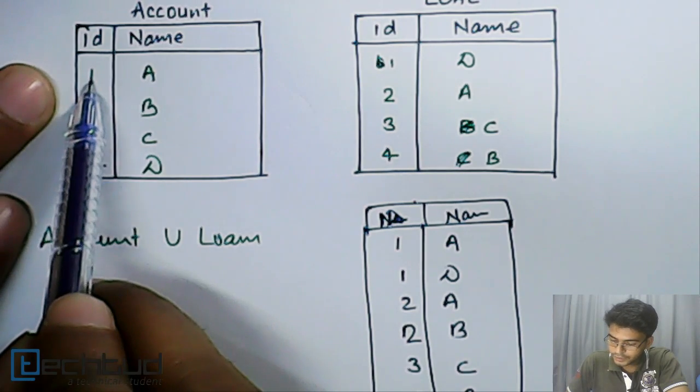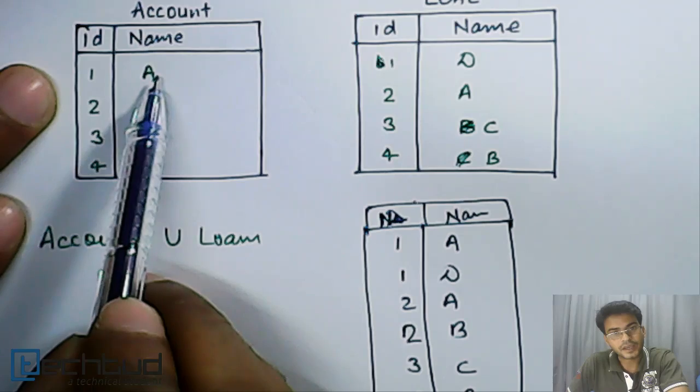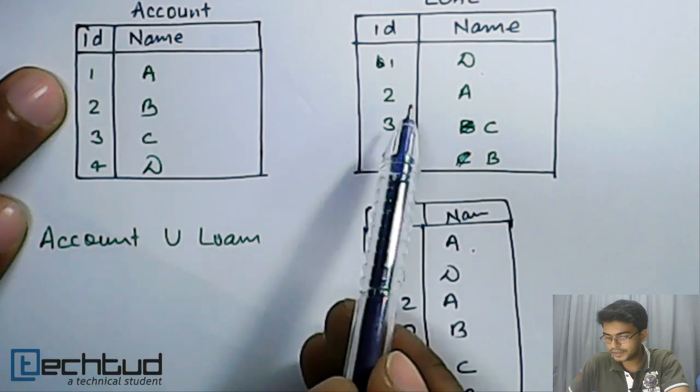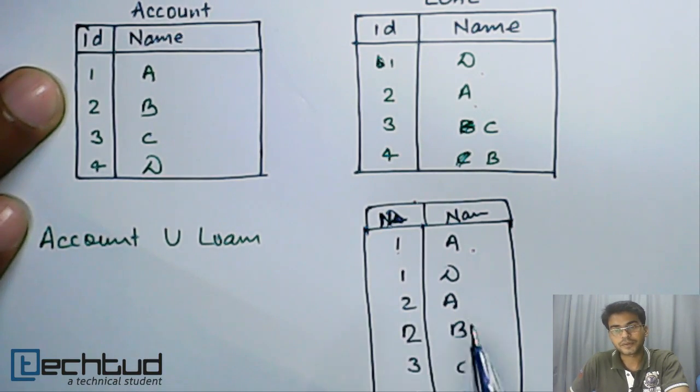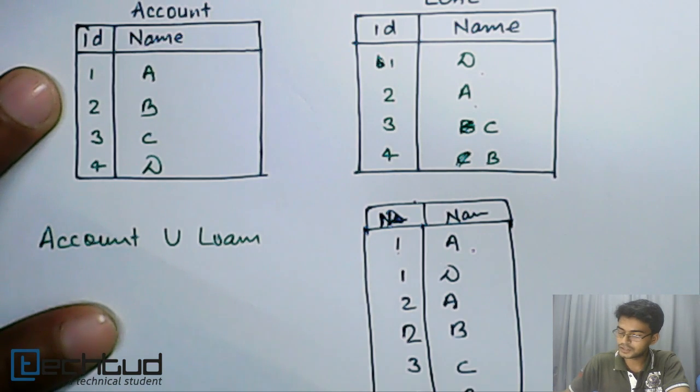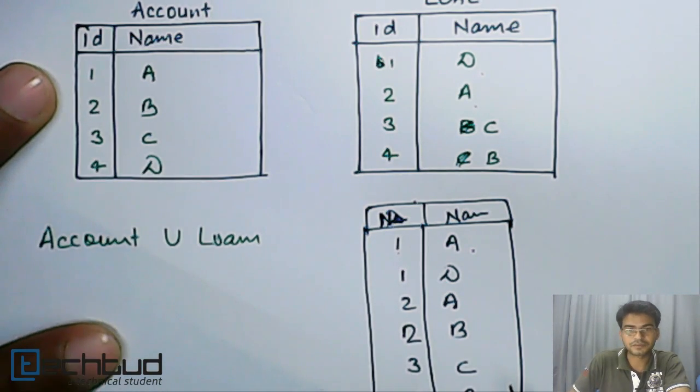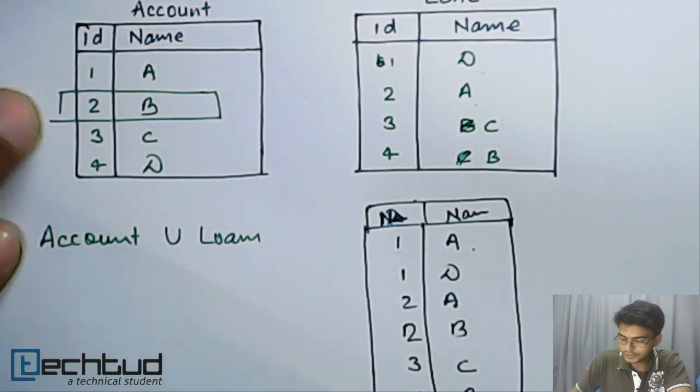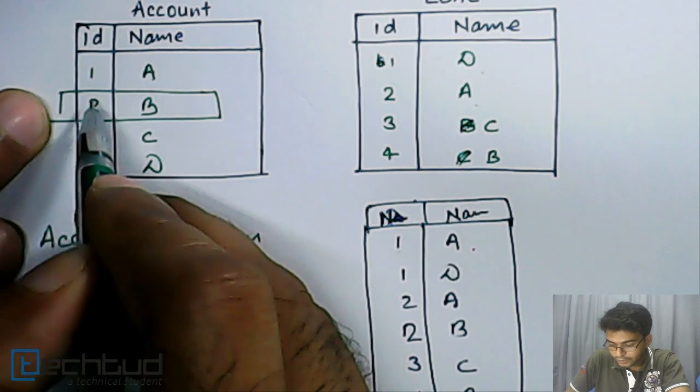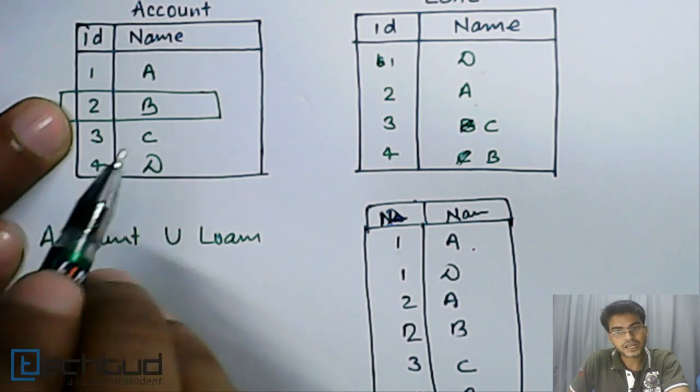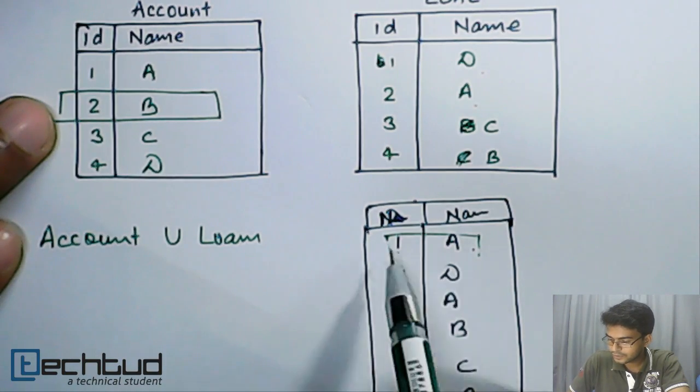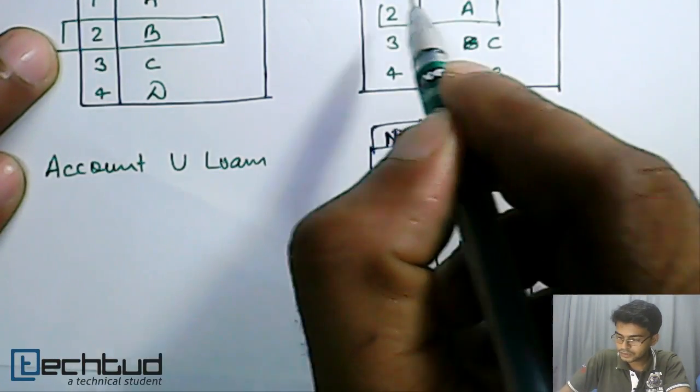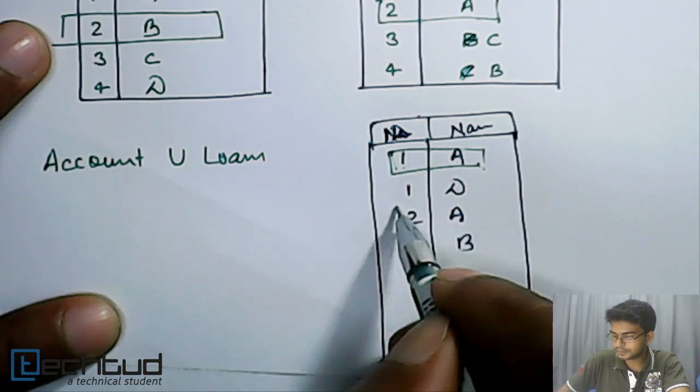First, we have ID 1 and name A, then 1 and D, then 2 and A. We are treating each tuple as one element of the set. This entire row is one element of the set. If any of the ID or name is different, then we will treat it as a different element. We have 1 A here, and 1 A is already there, but we're getting 2 A which is different, so we keep it separately.